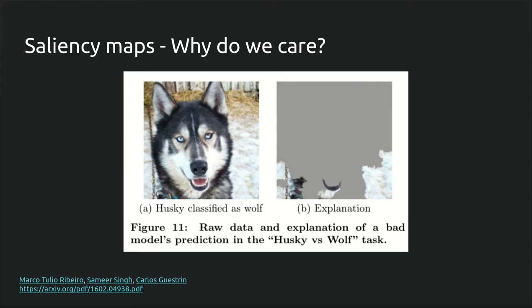A good example of this is a model that was trained by some researchers to distinguish between wolves and dogs. Though the model had relatively high accuracy, when they looked at explanations for why it was making its judgments, they found that the model wasn't actually distinguishing between wolves and dogs, but rather it was distinguishing between images with snow in the background and images that didn't have snow in the background.